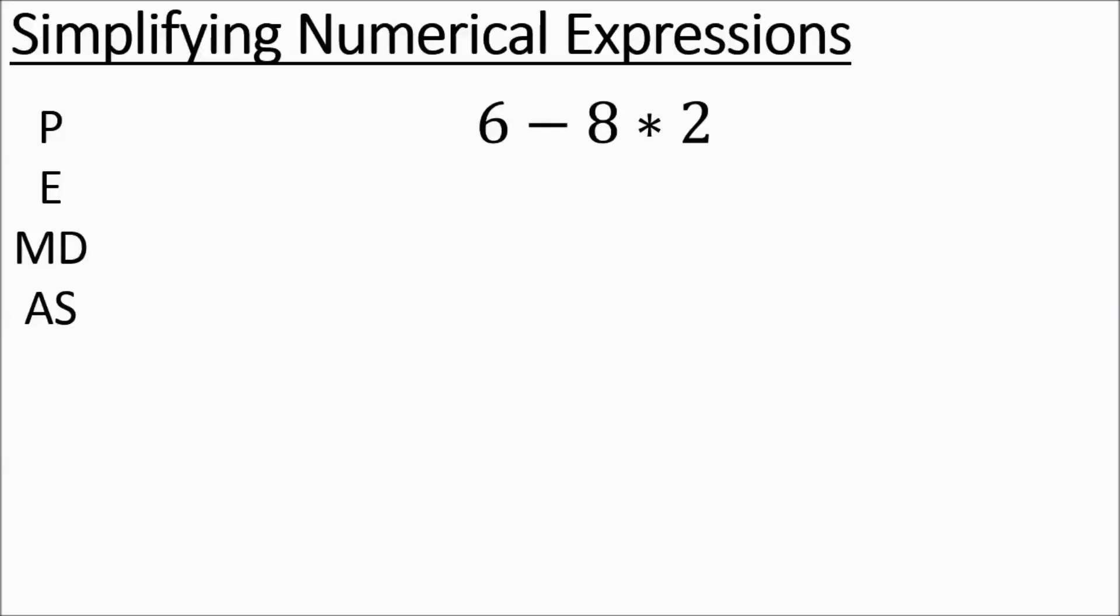The next one, we've got 6 minus 8 times 2. So you look for parentheses, none. Any exponents, none. Multiply divide. You do have some multiplying. The 6 is going to drop down, and then you do negative 8 times 2, which is a negative 16.